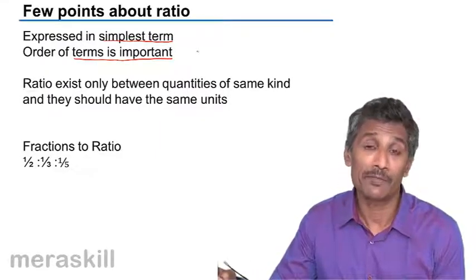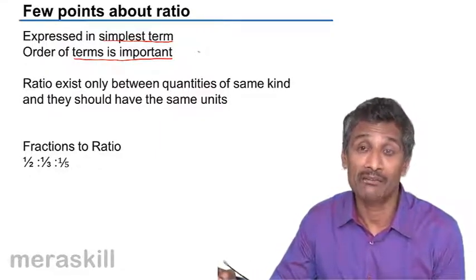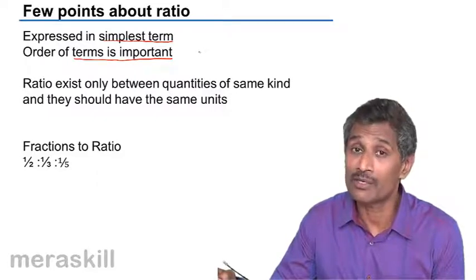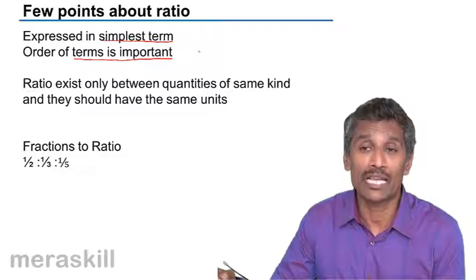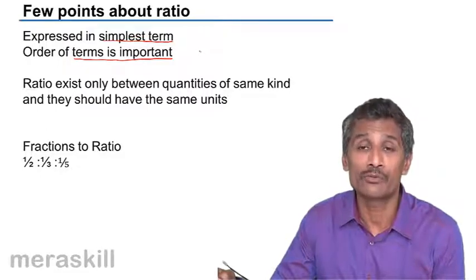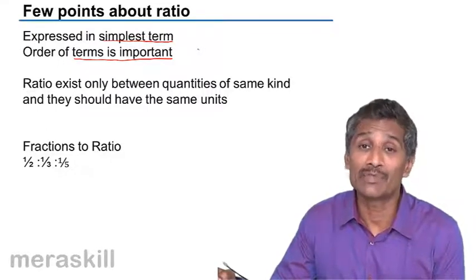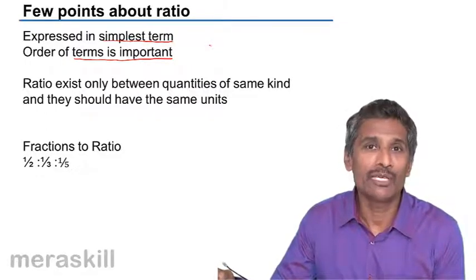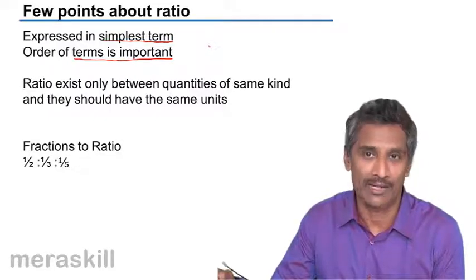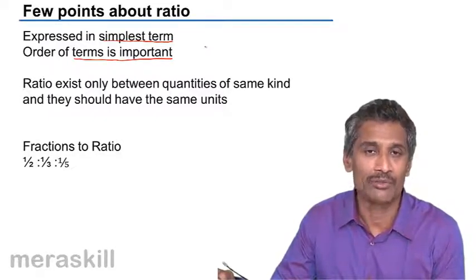Order of terms is important. For example, if I say ratio 7 is to 5 and the ratio 5 is to 7, they are not one in the same. Similarly, if I say ratio of the angles of a quadrilateral is 1:2:3:4, it is not the same as saying 3:2:1:4. They are two different things. The angles could be the same, but they would denote the wrong angle.